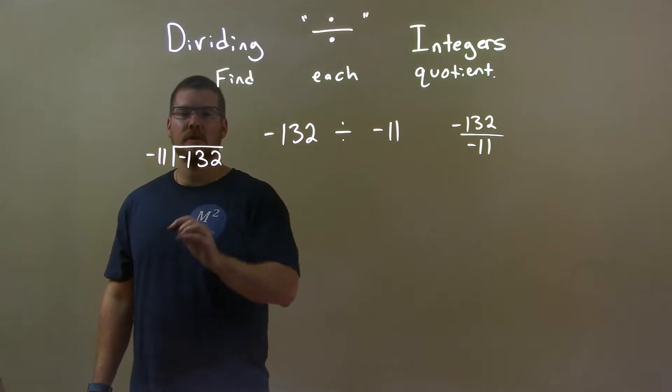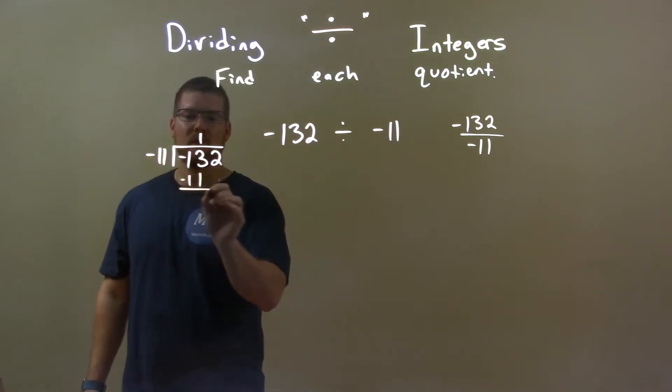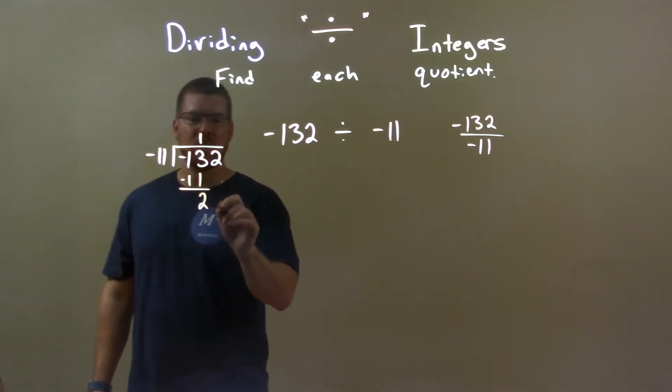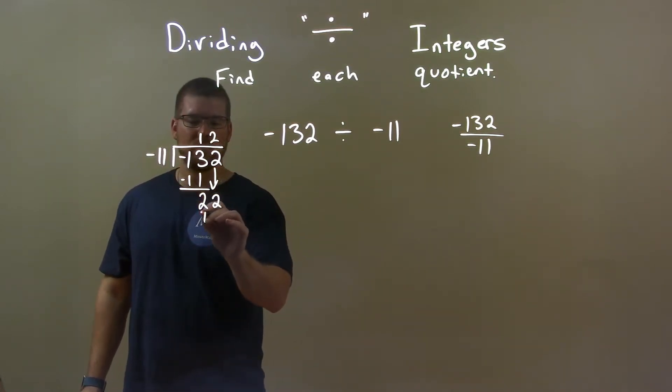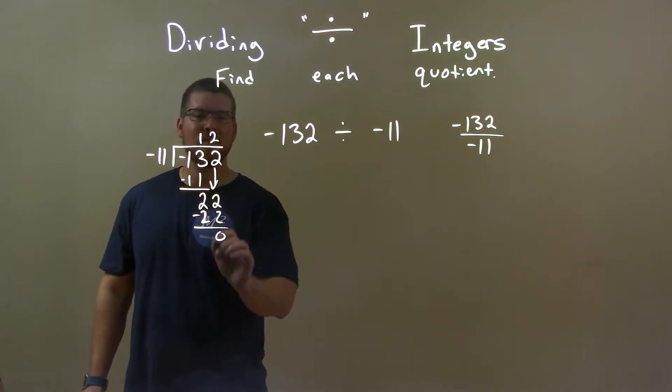11 goes into 13 one time. 1 times 11 is 11. Subtract the 2 and ignore the negatives in there. 13 minus 11 is a 2 and then we bring down this 2. Now, 11 goes into 22 two times evenly. 2 times 11 is 22 and we get 0.